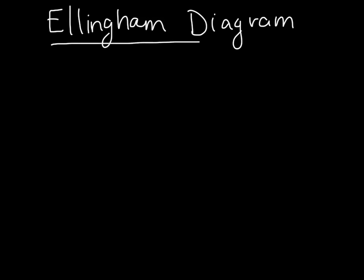Let's take a look at how an Ellingham diagram is created or constructed. An Ellingham diagram is one which allows us to find for an oxidation reaction what the equilibrium partial pressure is in the gas phase.